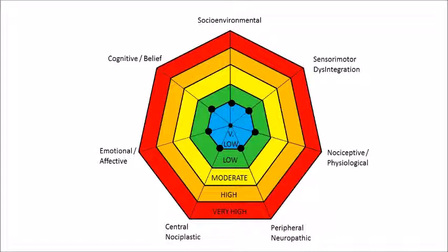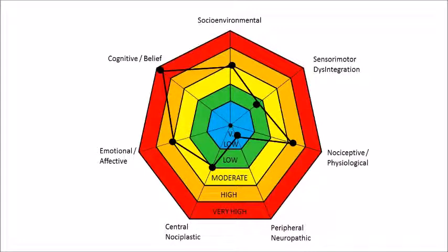Let's imagine we've gone through all that and we've identified the different drivers, and perhaps we end up with a profile that looks something like this. In this patient, for example, we can see that maladaptive cognitions and beliefs may be a strong driver of their pain experience, as do the nociceptive and physiological domains and perhaps the emotional and affective domains. Also, the socio-environmental domain in this patient is something that we might think about. So with a profile like this, you may decide that you're going to start by addressing some of those cognitions and beliefs and then work through some of those other domains.